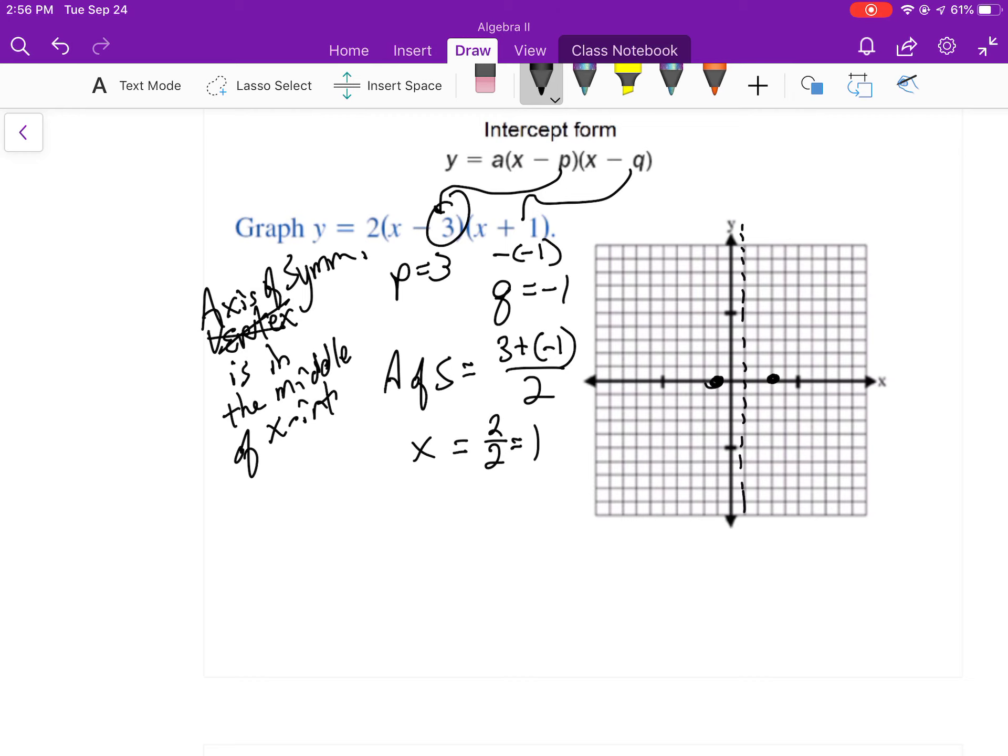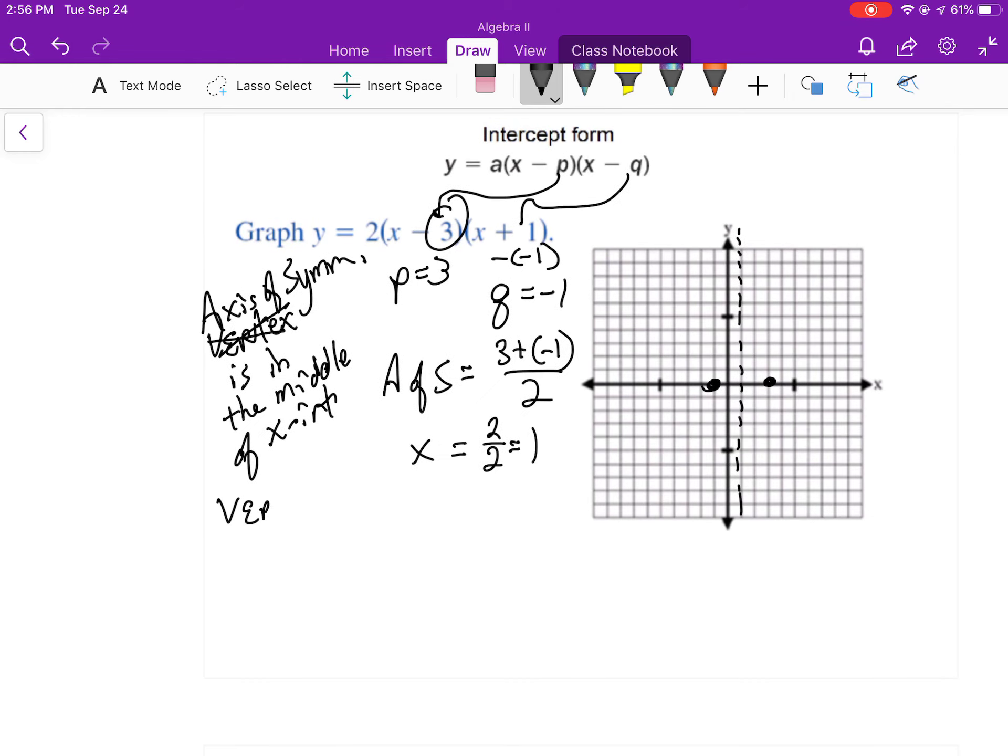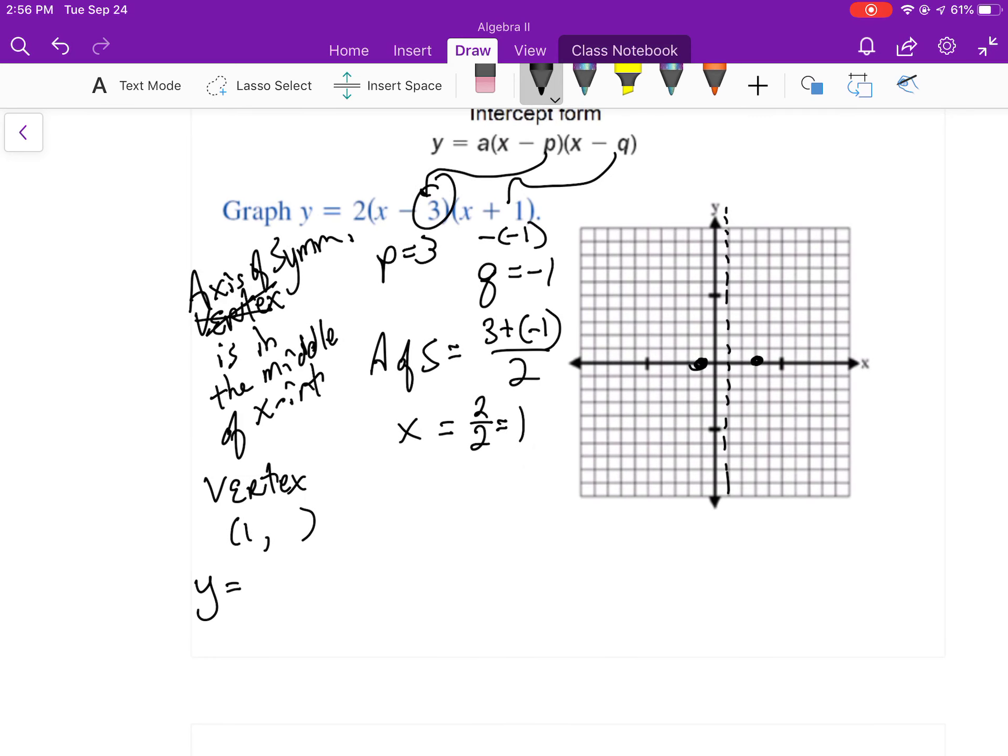If I want to find my vertex, I just found half of that. So I've got 1 comma some value of y. Now to find that y I'll put in a 1 for x into the original equation. So 2 times negative 2 times positive 2 gives me a negative 8. So there's the vertex.